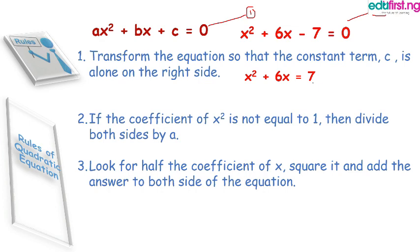Rule two says if the coefficient of x² is not equal to one, then divide both sides by a. We don't have a problem with equation two because the coefficient of x² there is one. But in the case of equation one, the coefficient of x² is a. So we divide both sides by a. That's what rule two says.